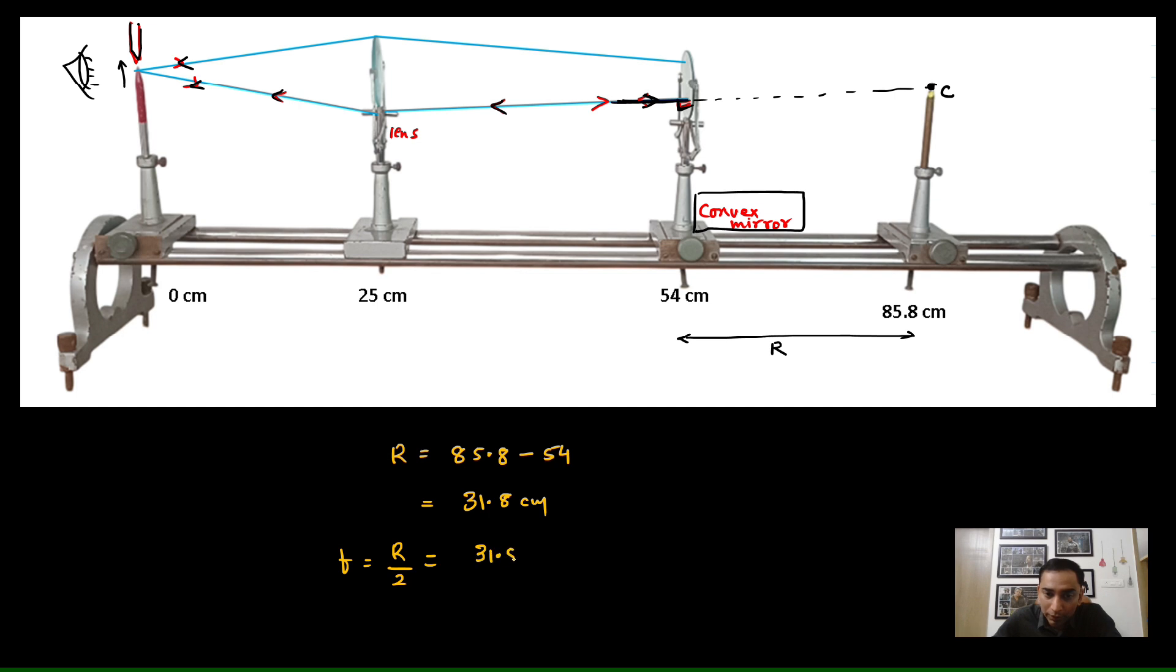And the radius of curvature divided by 2 is the focal length of the convex mirror. So, that is 31.8 divided by 2. So, this is 15.9 centimeters. That is the real focal length of the convex mirror. So, in case of the diverging system, whether it is a lens or a mirror, we need to take the help of some another lens to measure its focal length.